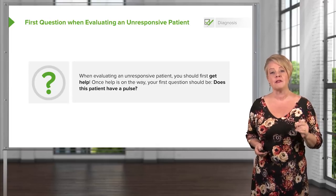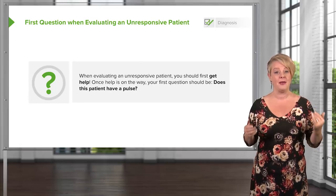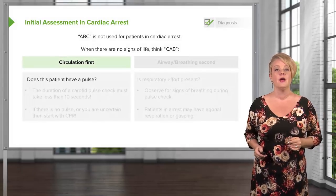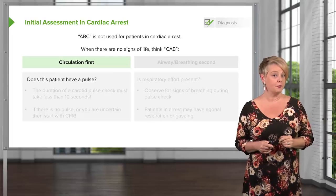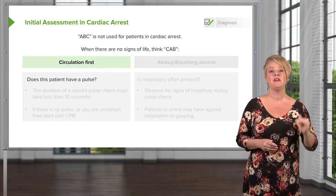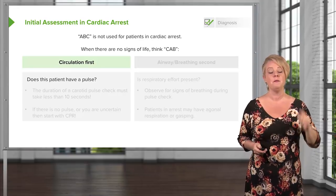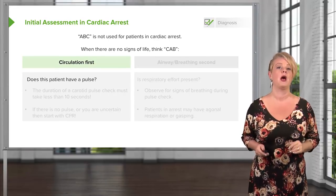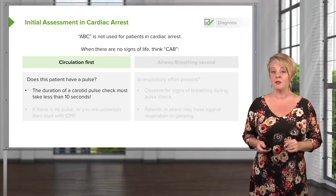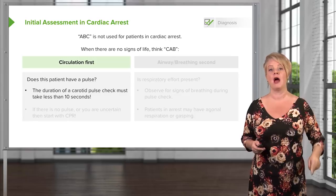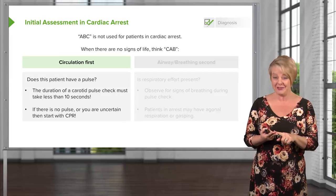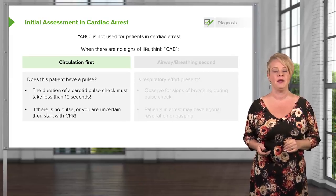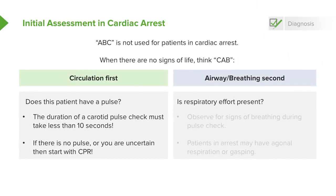Once you have help on the way, the next question you want to ask yourself is: does this patient have a pulse? This is why in cardiac arrest, we don't use the old ABC mnemonic — we use CAB, circulation first, because the first and most important question is whether or not your patient has a pulse. We want to check the pulse for a maximum of 10 seconds, always in the carotid. If at the end of that time there is no pulse or we have any question, we go ahead and initiate CPR. Only after deciding about the pulse do we worry about airway and breathing.